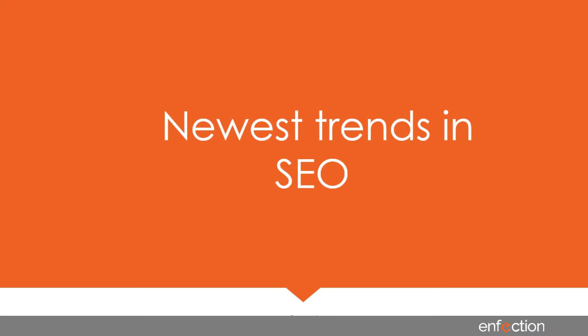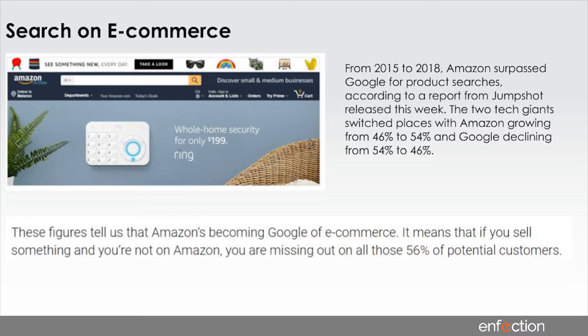What are the newest trends in SEO? Amazon is huge. Amazon has actually surpassed Google in terms of product-related searches — mainly in the US and UK — going from 46% to 54% while Google declined from 54% to 46%. Interestingly, people who don't even want to buy on Amazon go search the Amazon price first and then buy somewhere else. That's the amount of power these guys have.